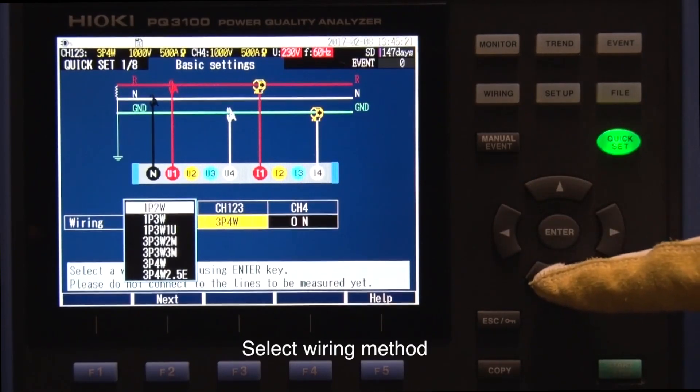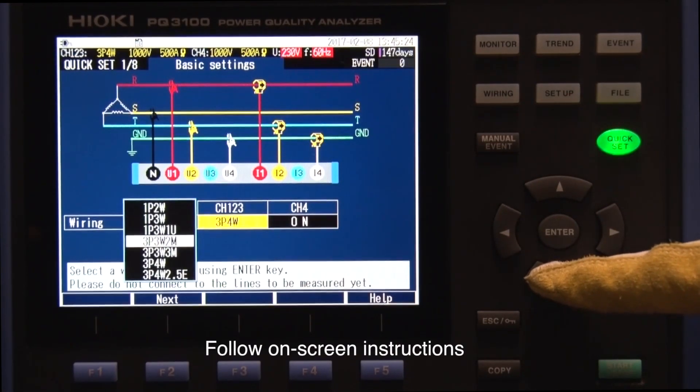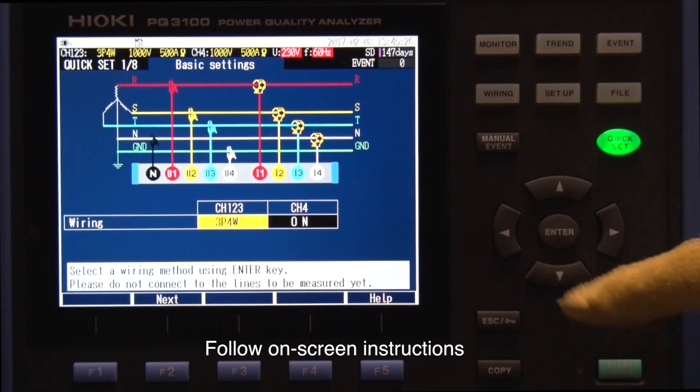First, select the wiring method, then follow the instructions on the screen to connect the voltage leads and current sensors.